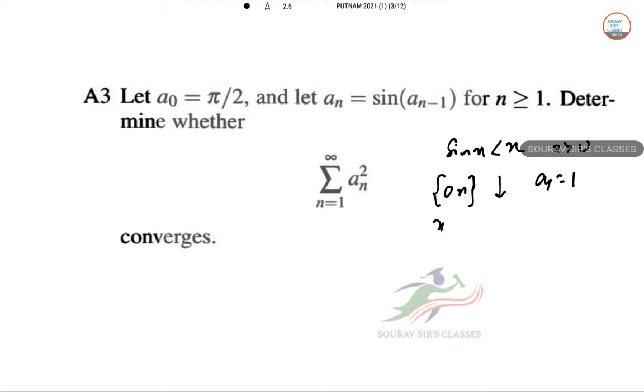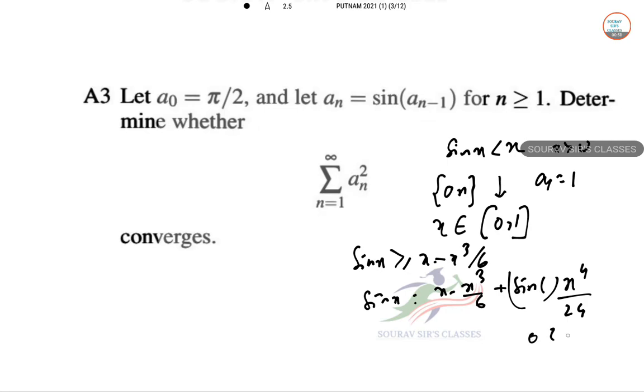Now we observe what happens between 0 and 1, so sin x ≥ x - x³/6. This follows from Taylor's theorem with the remainder, since sin x = x - x³/6 + sin(c)·x⁴/24 for c, where c lies between 0 to x.